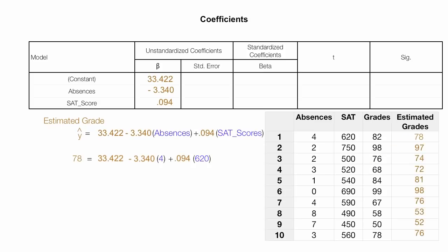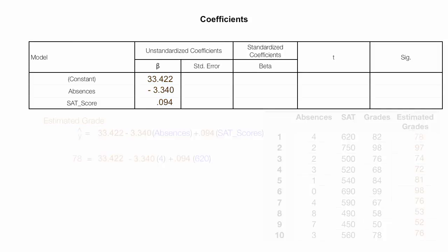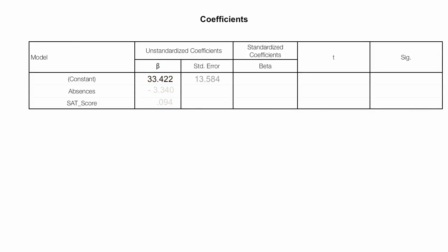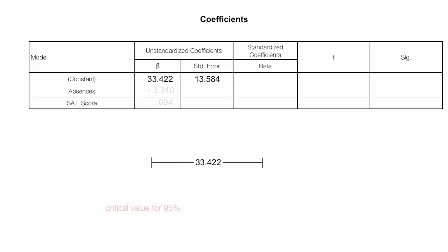I could repeat that for all estimated grades for all students. The next column is standard error — think margin of error when you see that. All the betas are just estimates, so there's going to be a range or confidence interval. Depending on how well my model fits, that confidence interval will be different sizes. If I determine my critical value for 95% confidence, alpha equals 0.05, and determine degrees of freedom — which is sample size minus 3, because I'm estimating three things: constant, absences, and SAT score — I have 10 minus 3, which equals 7 degrees of freedom.